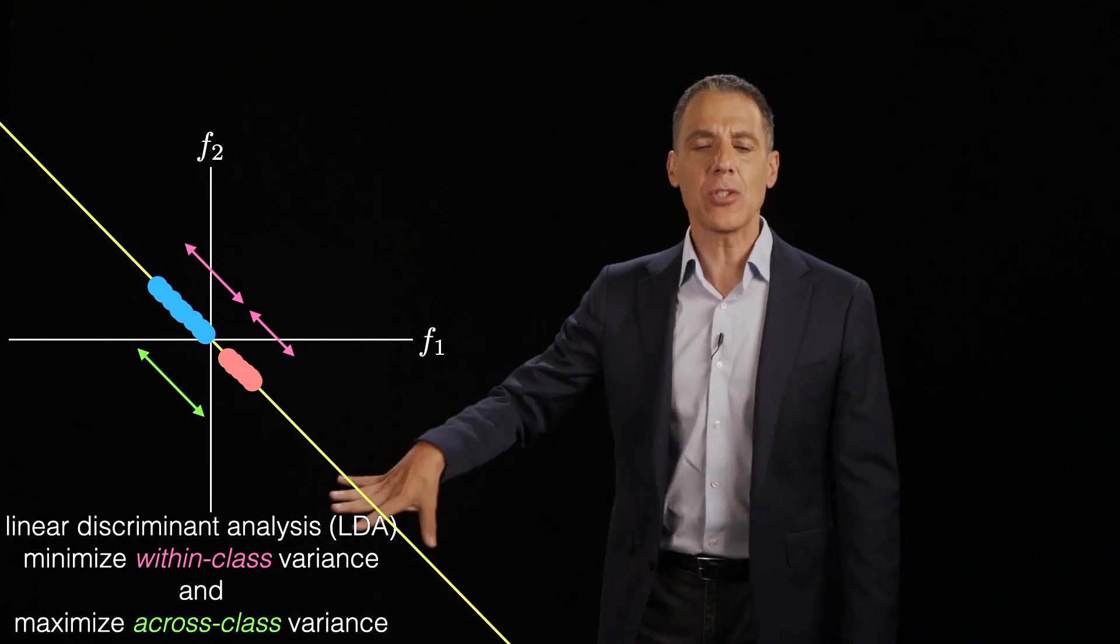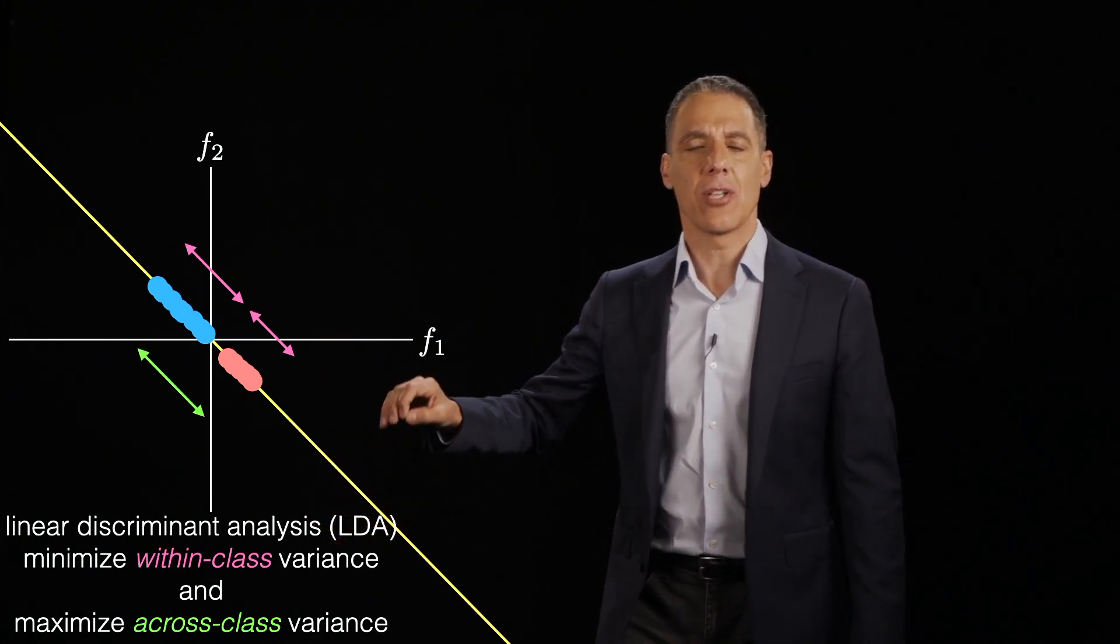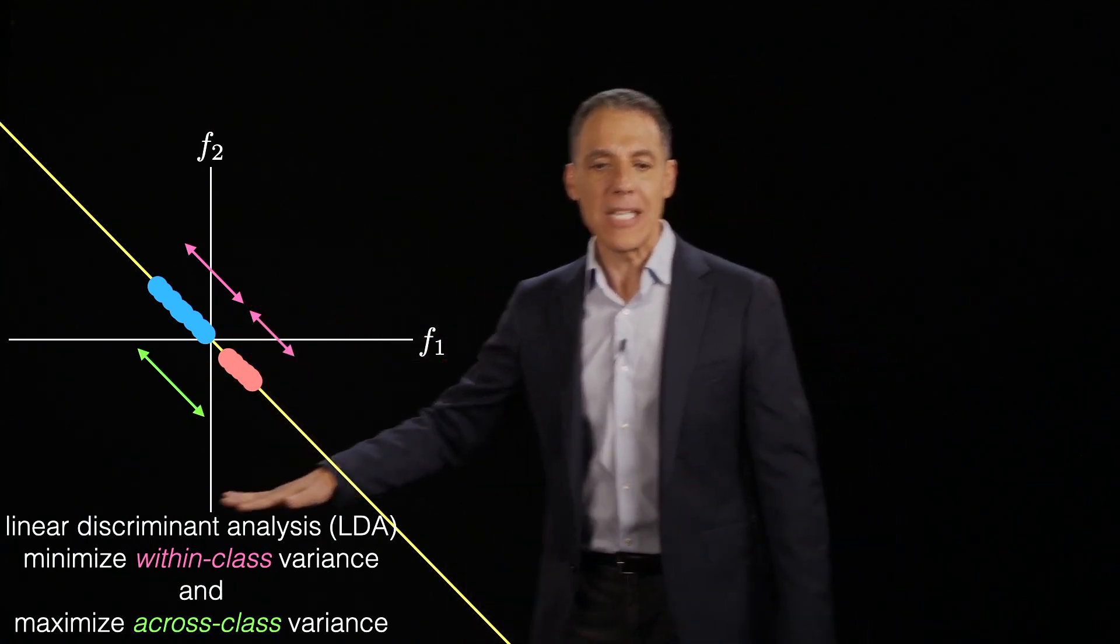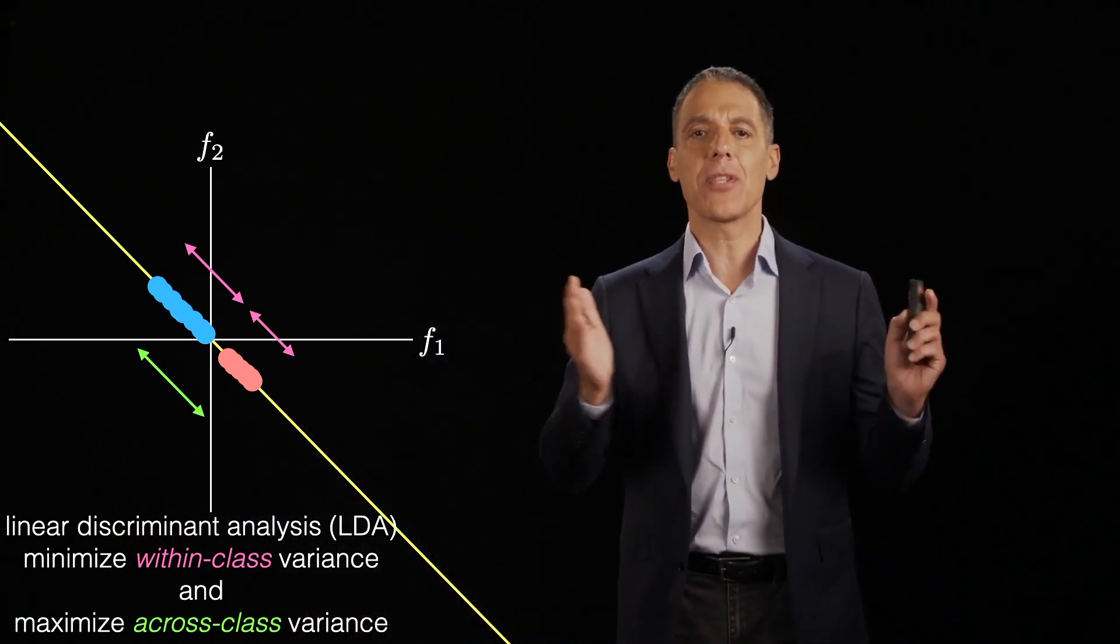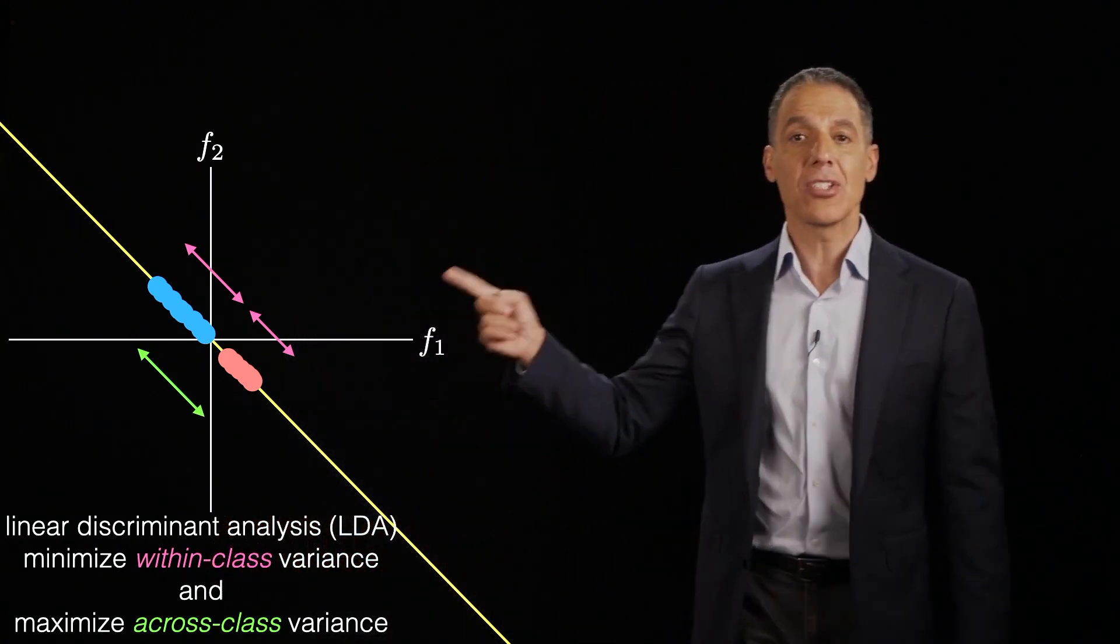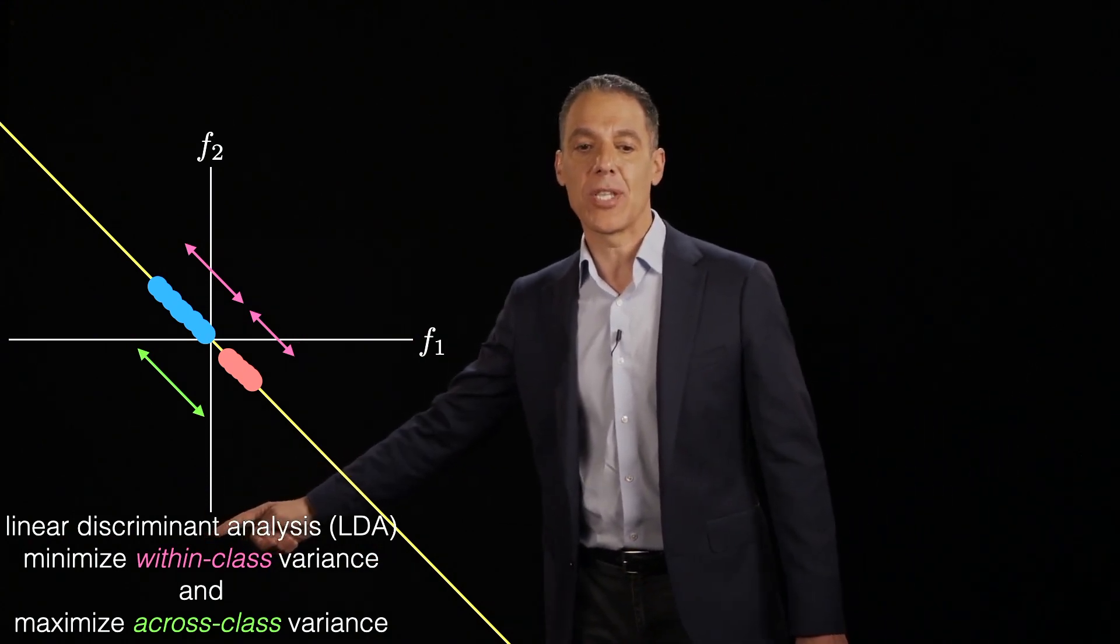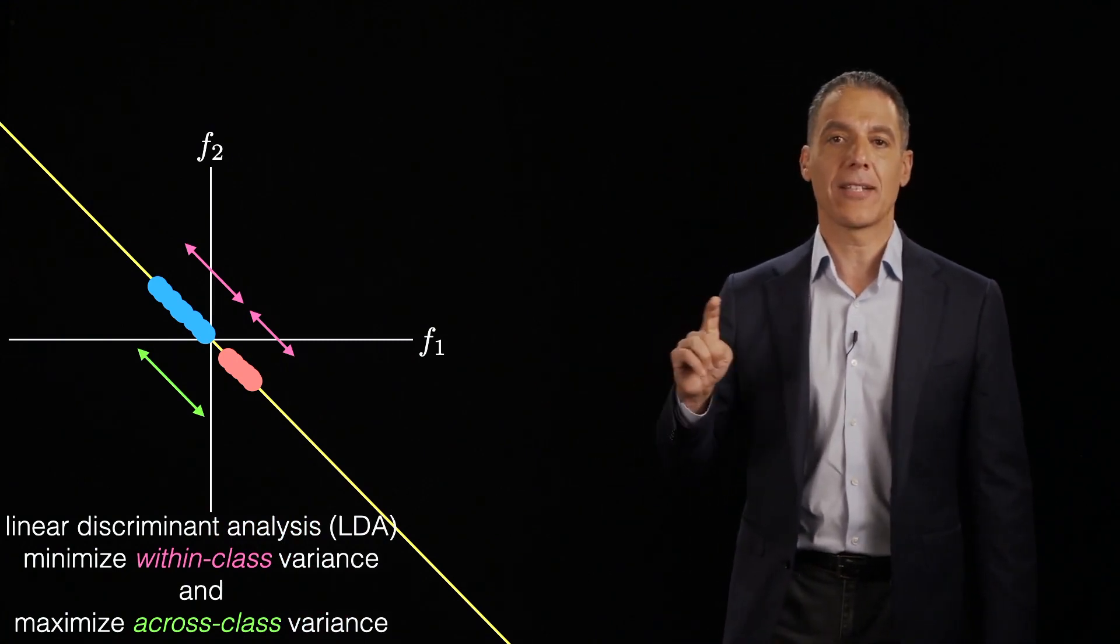The first technique that we're going to look at is called linear discriminant analysis, sometimes called Fisher linear discriminant after the mathematician Fisher. What linear discriminant analysis does is the same game that we've been playing. It's going to come up with an objective function and it's going to maximize or minimize that objective function. And what this objective function is going to do is it's going to minimize the within-class variance and maximize the across-class variance.